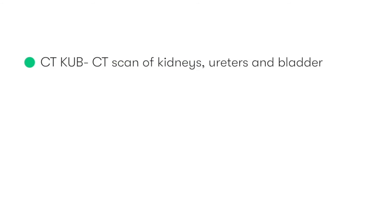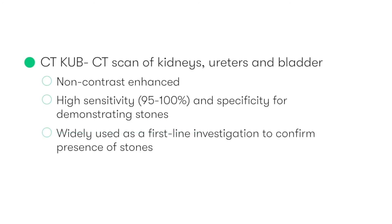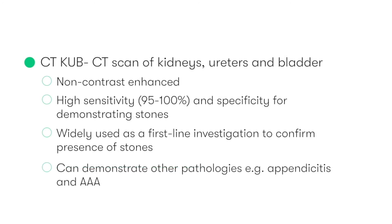The main investigation we can use is CTKUB, or a CT scan of the kidneys, ureters, and bladder. CTKUBs are a non-contrast enhanced CT scan, which means that they don't use any radio-opaque contrast. They are both highly sensitive and specific in demonstrating the presence of urinary tract stones, and this is why they are widely considered to be the first-line investigation in patients who present with presumed acute urinary tract calculi. An additional benefit of CTKUBs is that they can also reveal the presence of other pathologies, including appendicitis and an AAA.